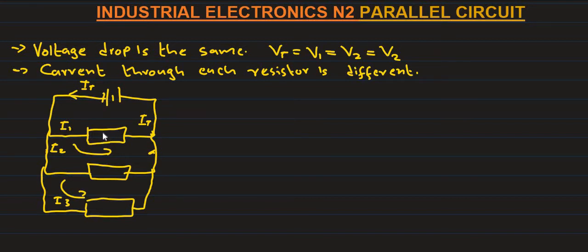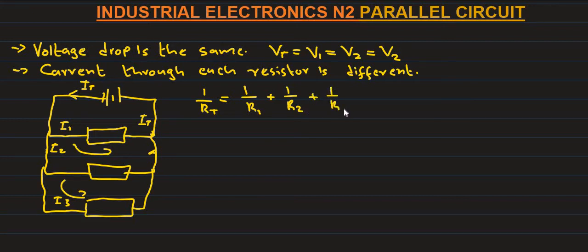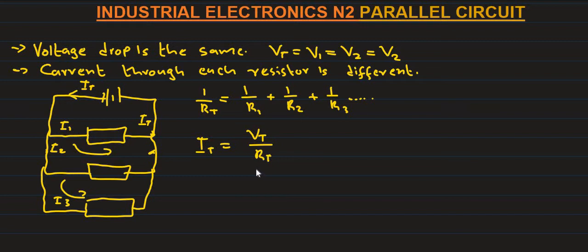So, those in a parallel circuit, to calculate total resistor: 1 over R total equals 1 over R1 plus 1 over R2 plus 1 over R3. And if you want to find the individual resistor, it's R1 plus R2. And 1 over R total. So, we want I total — I total is equal to total voltage divided by total resistor.